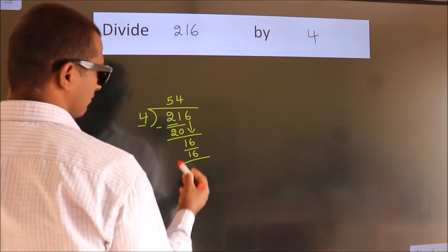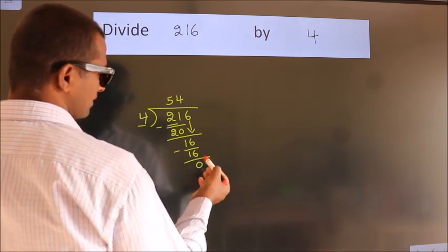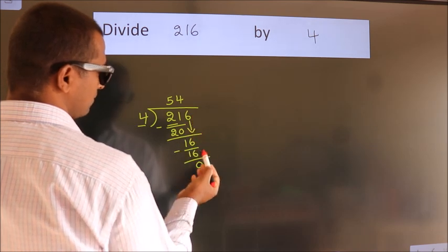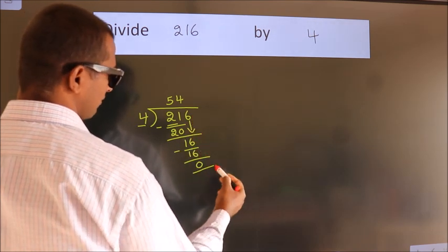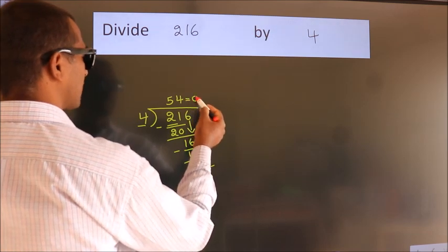Now, we subtract. We get 0. After this, no more numbers to bring down. And we got remainder 0. So, this is our quotient.